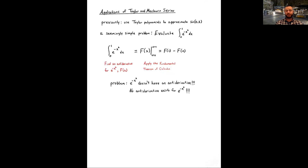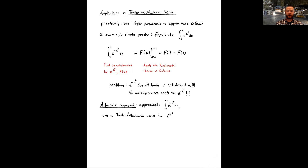The problem is that e to the negative x squared doesn't have an antiderivative. There is no function that exists which differentiates to e to the negative x squared, so no matter how hard we try, we cannot get an antiderivative to apply the Fundamental Theorem of Calculus.